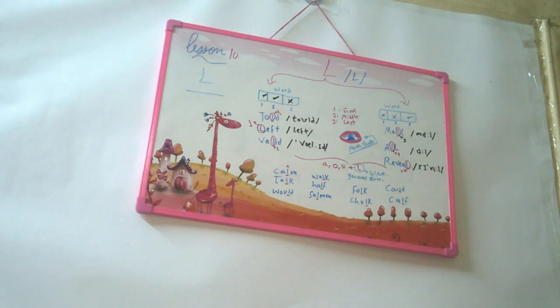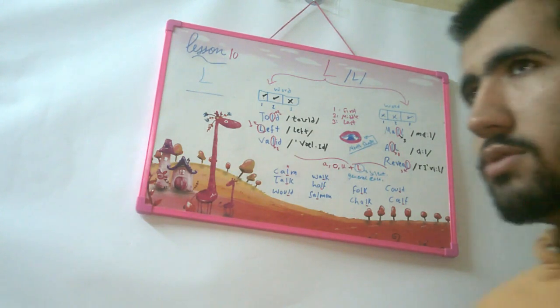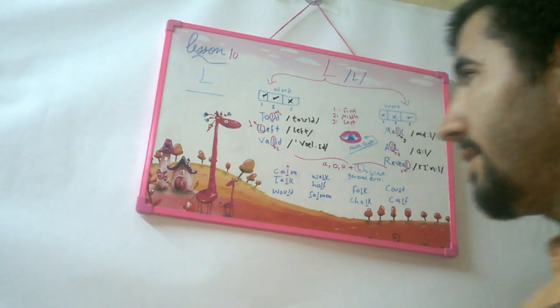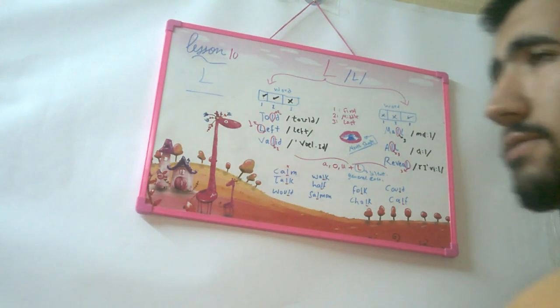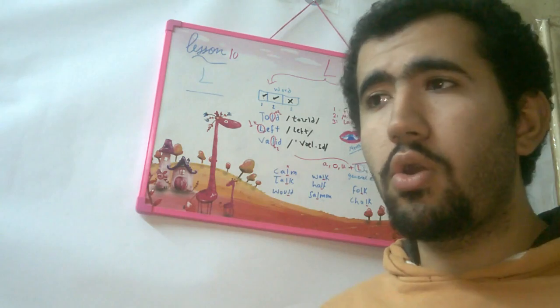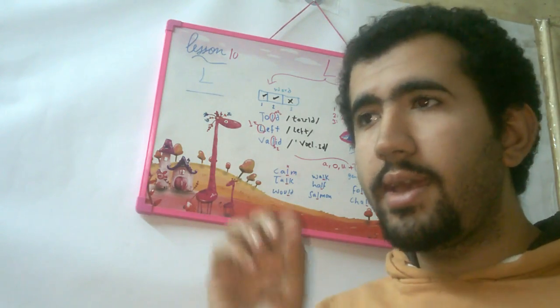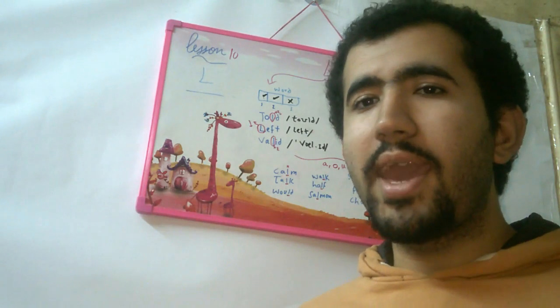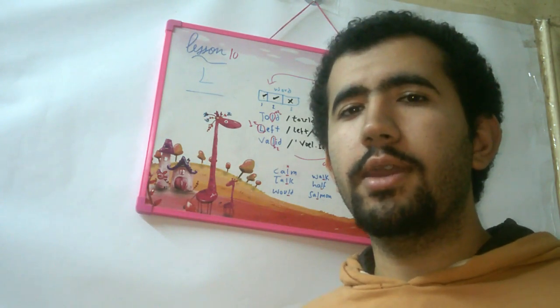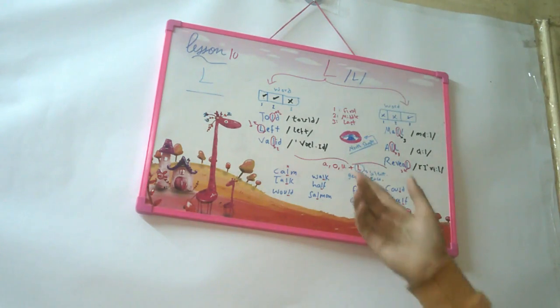Okay? When L is silent, you see that many words the L is silent. And there's a rule for that. The rule is that after A or O or U, when L comes after A or O or U, the L is silent. Okay? As you may see in these words.